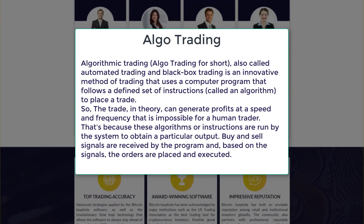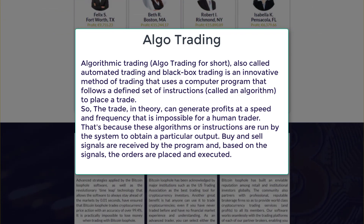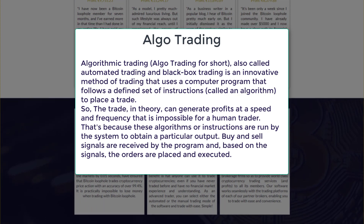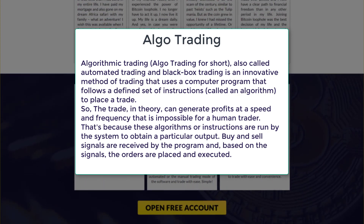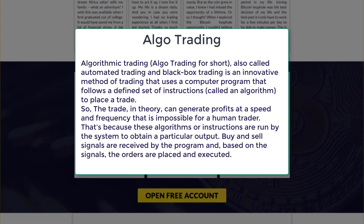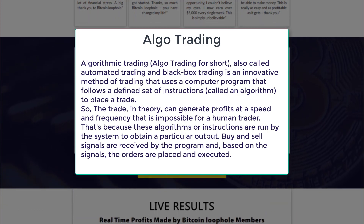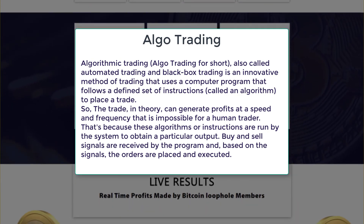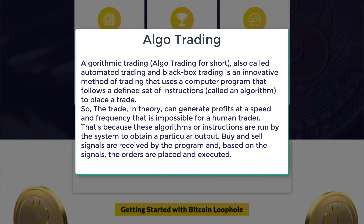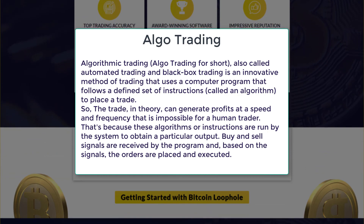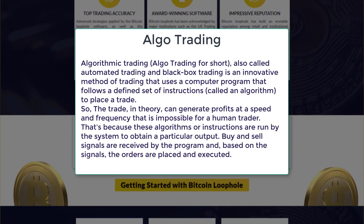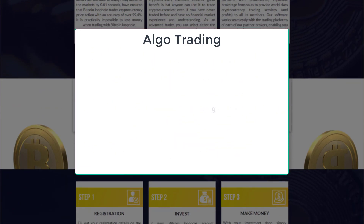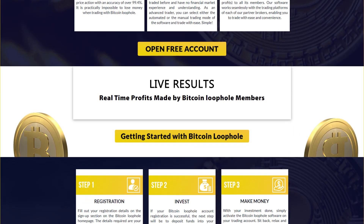The trade in theory can generate profits at a speed and frequency that is impossible for a human trader. That's because these algorithms or instructions are run by the system to obtain a particular output. Buy and sell signals are received by the program and based on these signals, the orders are placed and executed.